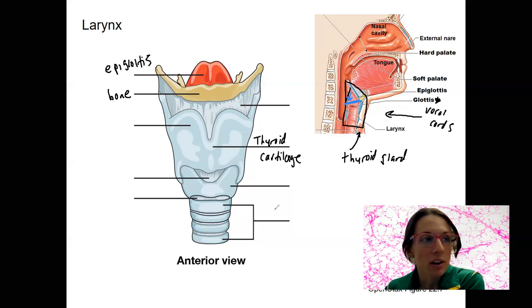These labeled structures here are tracheal cartilages that we'll come back to. So cartilage is a big part of supporting this conducting passageway larynx and trachea.